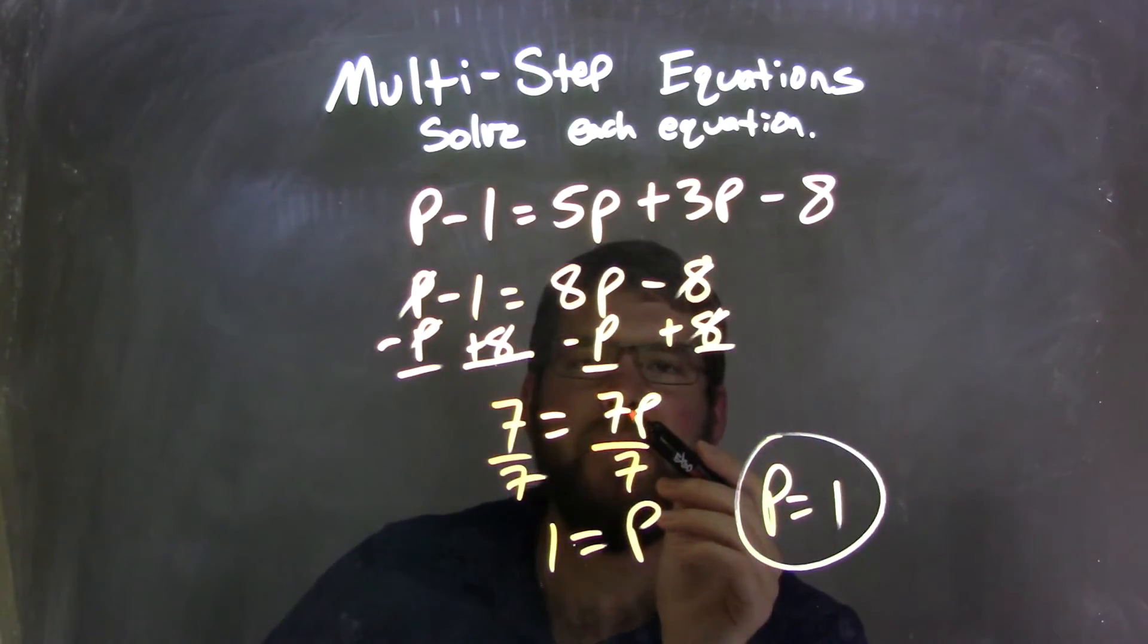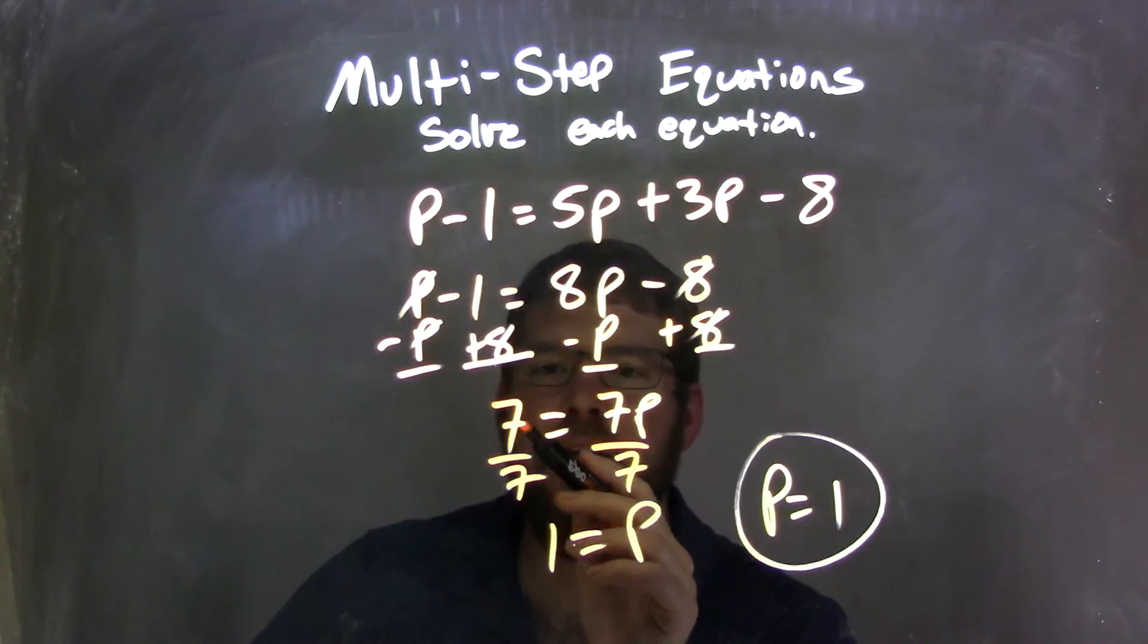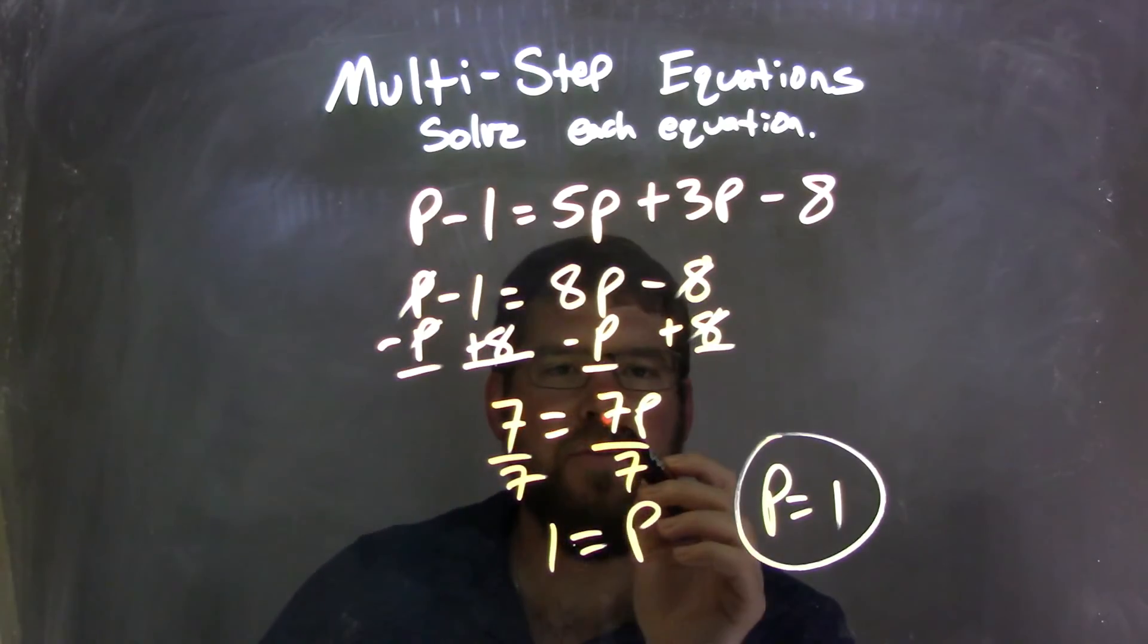So I had 7p over here on the right, and then by bringing the 8 over, I got a 7 on the left. So I had 7 equals 7p.